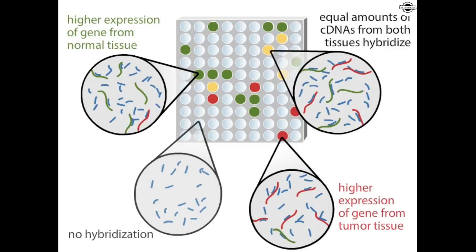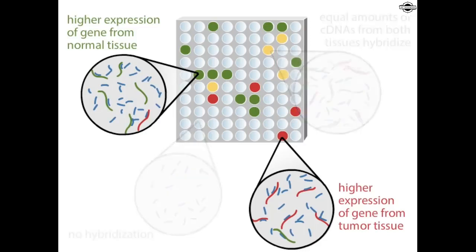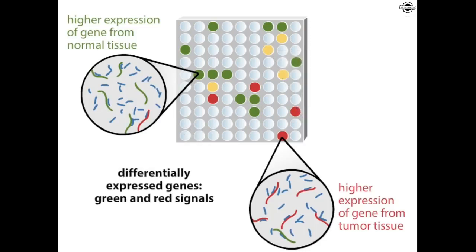Because each area of the microarray contains a known DNA sequence corresponding to a known gene, the identities of the hybridizing cDNAs can be determined. Using these data, investigators can establish which genes are expressed differently in the cancerous tissue, and thus may be able to design better treatment strategies.